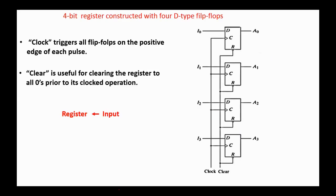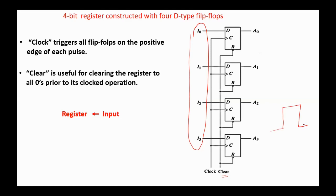This is the circuit diagram for a 4-bit register constructed with 4 D-type flip-flops. Clock triggers all flip-flops on the positive edge of each pulse. Clear is useful for clearing the register to all zeros prior to its clock operation. The input applied to the register is stored in the D flip-flops when the clock pulse changes its state from low to high on the positive edge.